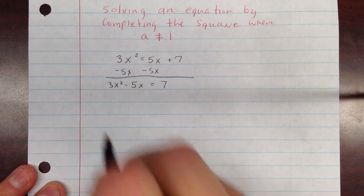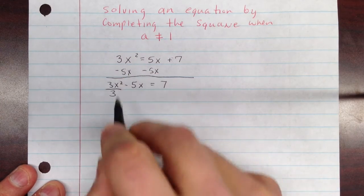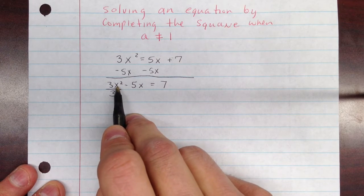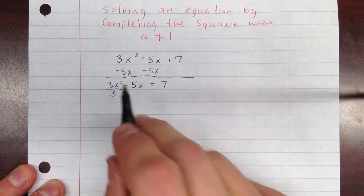Now we need to divide by 3. And we're dividing by 3 because we want this to cancel out. We want the coefficient of the x squared term, which is a, we want that to equal 1.